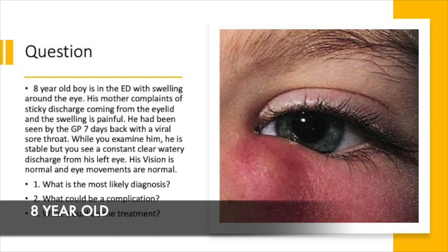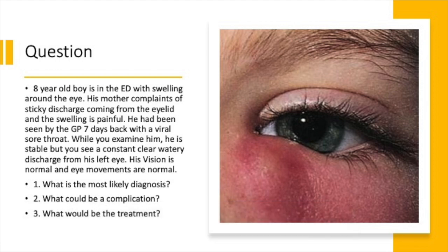Let's begin with a clinical scenario. An 8-day-old boy is in the emergency department with swelling around the eye. His mother complains of a sticky discharge from the eyelid and the swelling is painful. He was seen by the GP seven days back with a viral sore throat. On examination he's stable, with a constant clear watery discharge from his left eye. His vision is normal and eye movements are also normal. What is the most likely diagnosis, what could be a complication, and what would be the treatment?